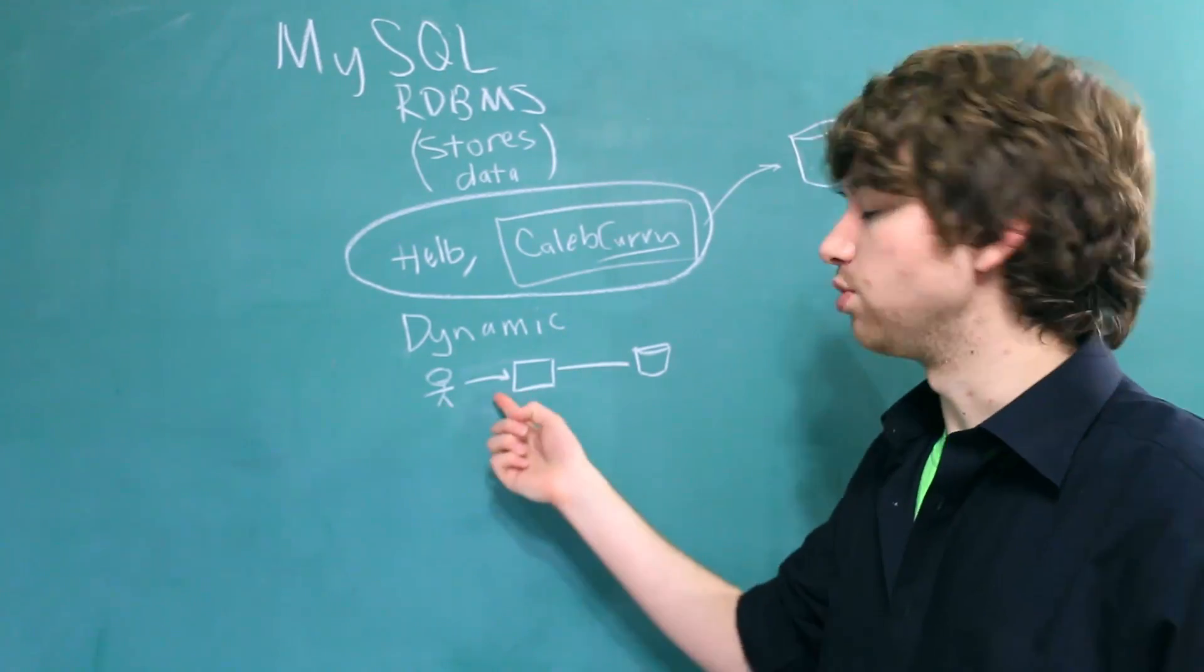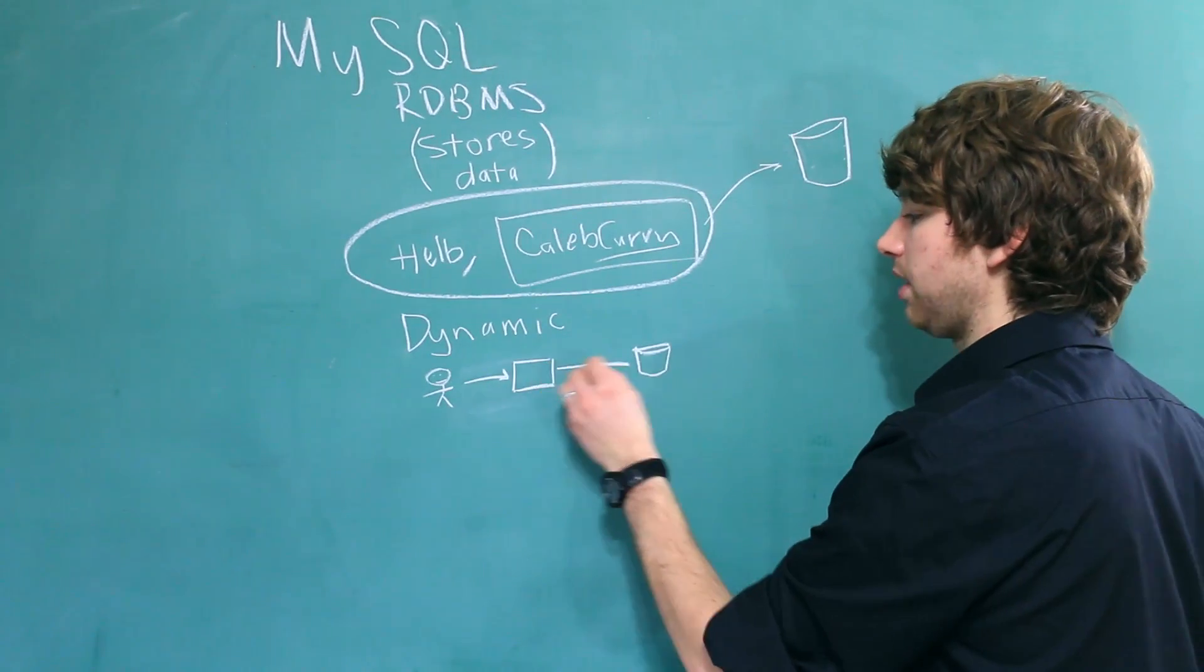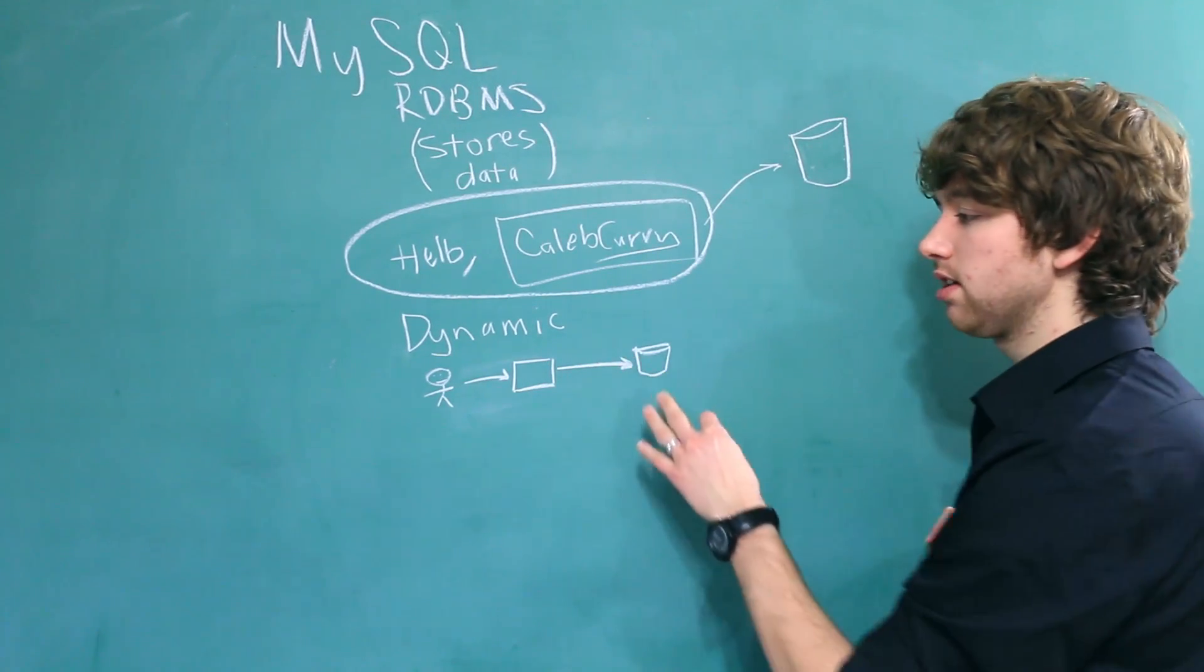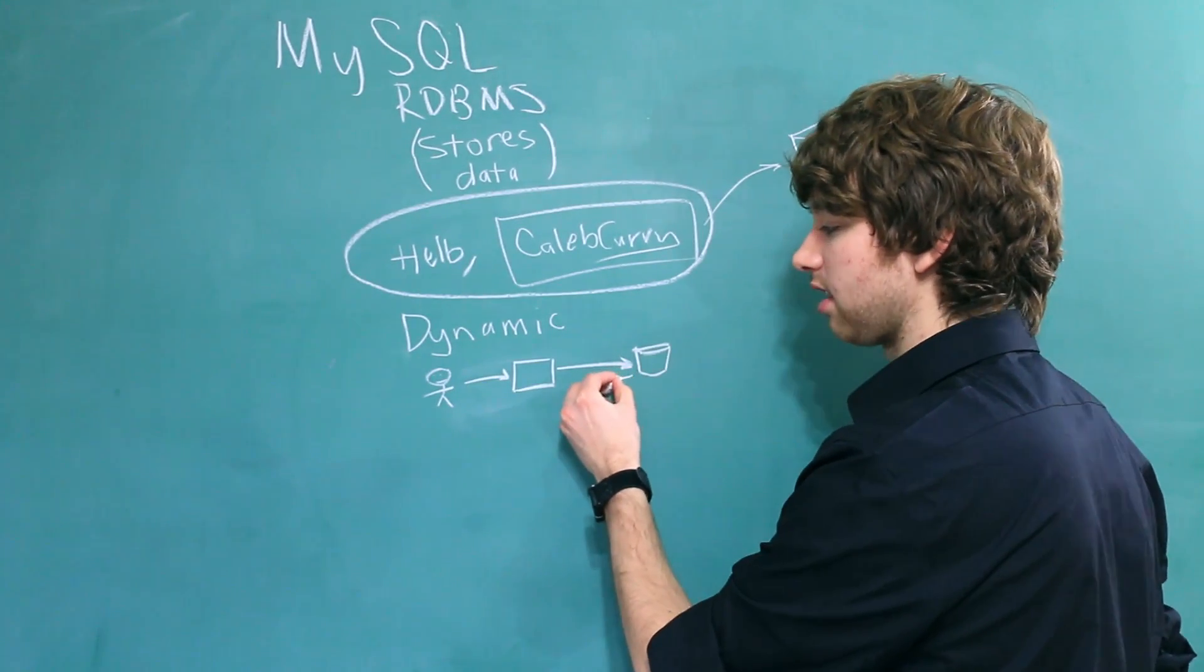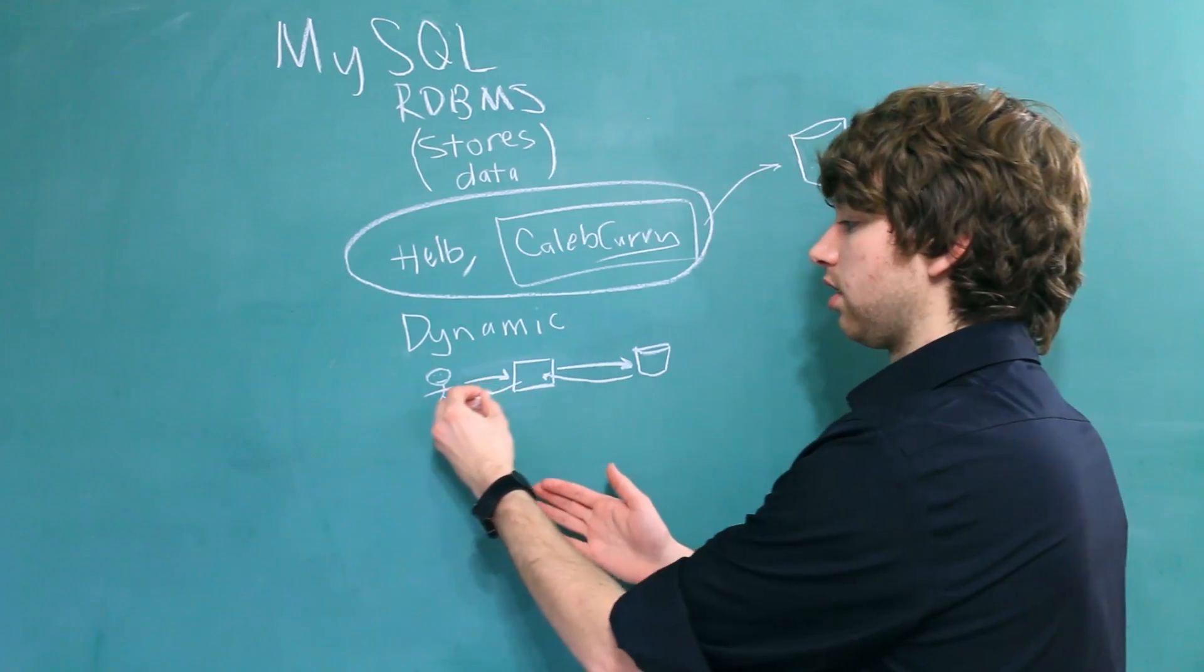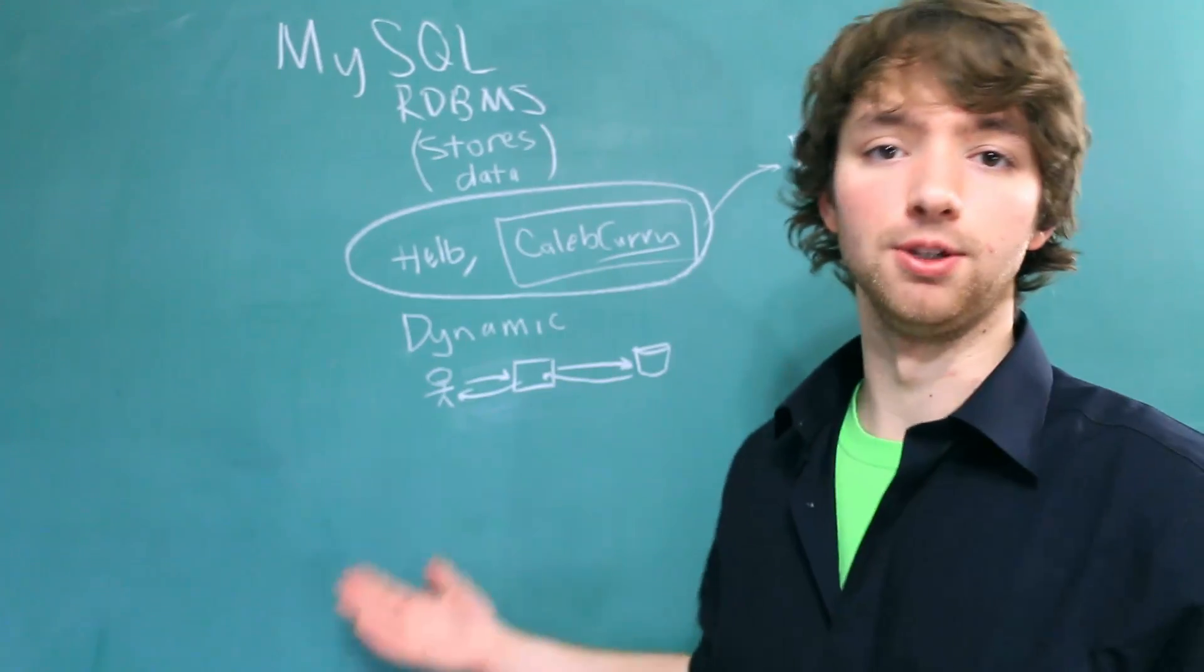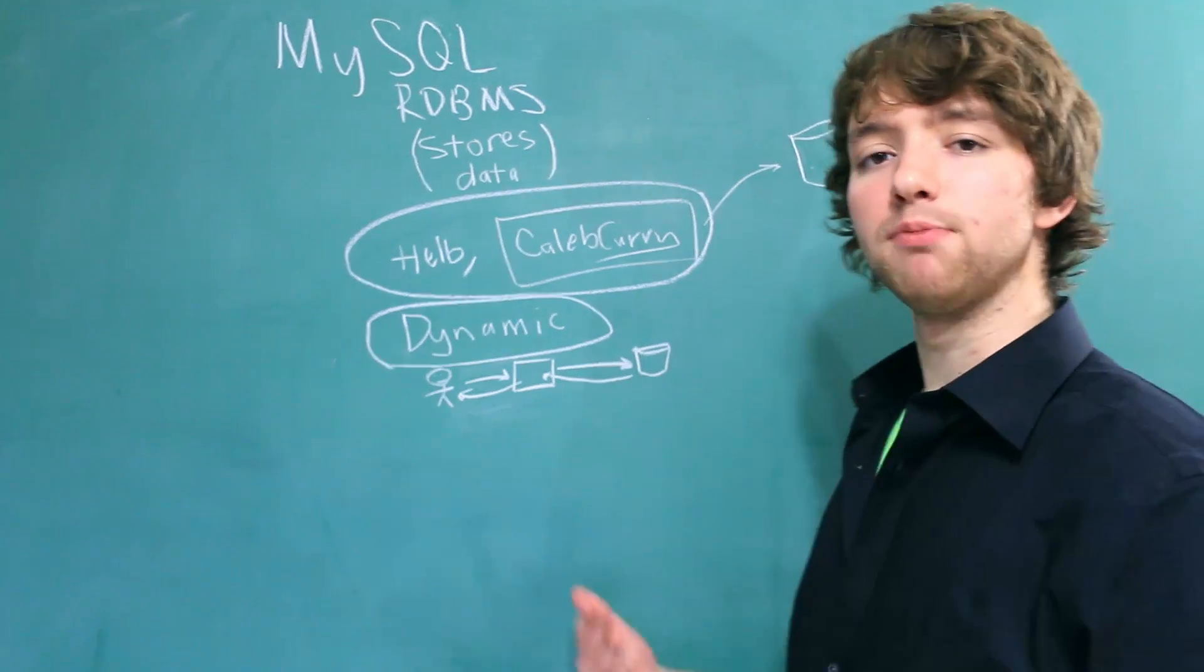The code itself is going to get information from the database to present to the user. So let's say this user uses this application, does something on it, and that information is stored inside of the database. Well, then later when he wants to use the application again, we can get that data from the database and present it in the application, and then that will be delivered to the user. So this is kind of the key word of it all.